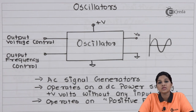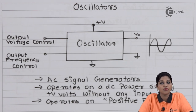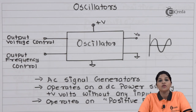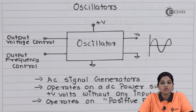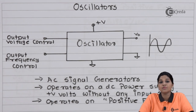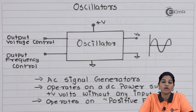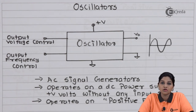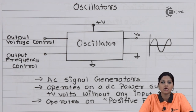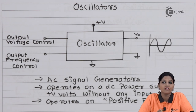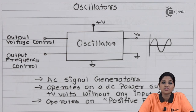Now let's understand how the oscillator produces output oscillations by using positive feedback. To understand positive feedback, we first need to understand what feedback means. Feedback is basically a process in which a part of the output is given back to the input either through a feedback network or directly. There are two types of feedback: positive feedback and negative feedback. In positive feedback, the output and input are in phase with each other and therefore it is also called regenerative feedback.